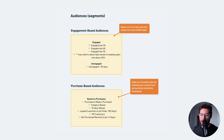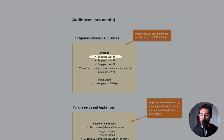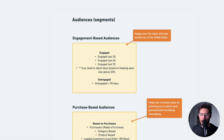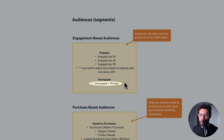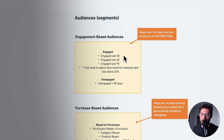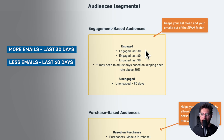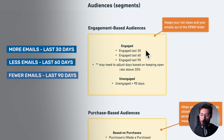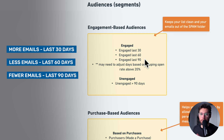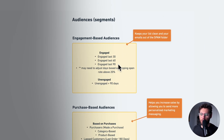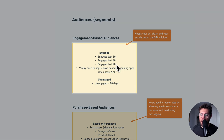Here are the engagement-based audiences to start with: people that engaged in the last 30 days, last 60 days, and last 90 days. You would send more emails to the 30-day group, fewer to the 60-day group, and even fewer to the 90-day group. There are more people in each audience the longer the time period, but the 30-day group should yield higher open rates.